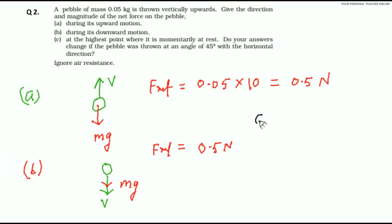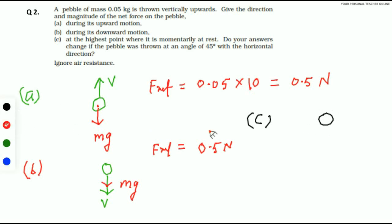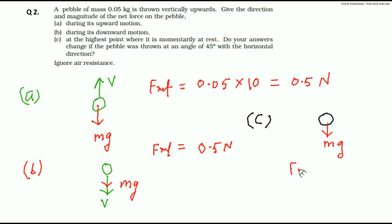Part C: at the highest point, the pebble is momentarily at rest. At the highest point, if velocity is 0, that time also the force will act as mg in the downward direction. So, again net force will be 0.5 Newton.